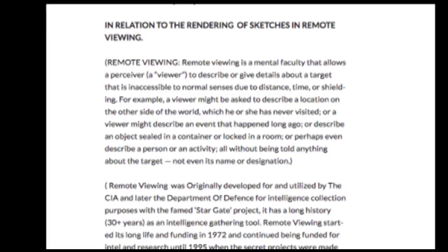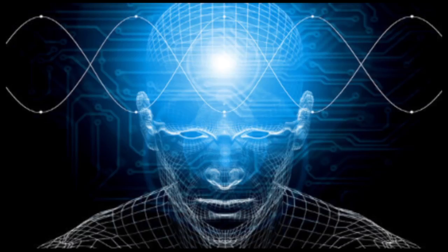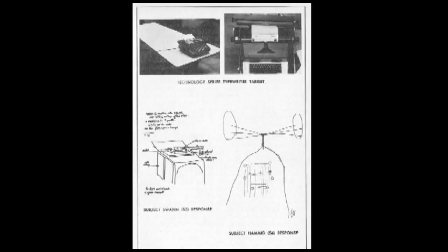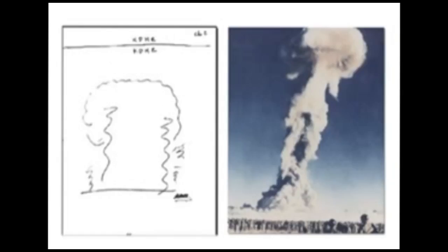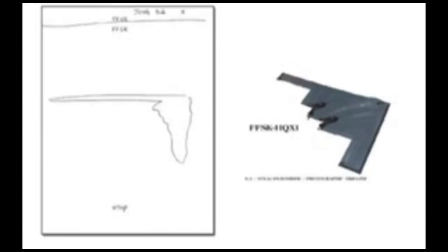For example, a viewer might be asked to describe a location on the other side of the world which he or she has never visited, or a viewer might describe an event that happened long ago or describe an object sealed in a container or locked in a room, or perhaps even describe a person or an activity, all without being told anything about the target, not even its name or designation.